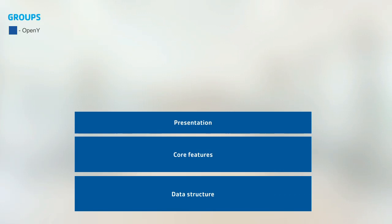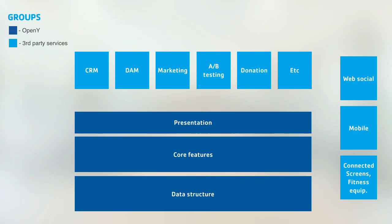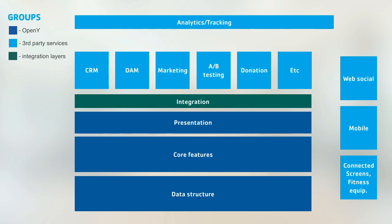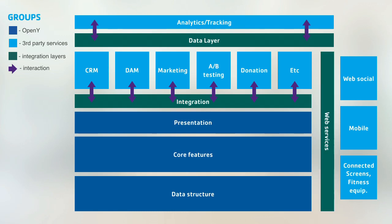From a business perspective, the OpenY architecture has two base layers: data structure and core features, plus a presentation layer visible to customers. We also have many third-party services requiring integration — web applications, social applications, mobile applications, and even equipment at branches. On top of this we have analytics and tracking. We created an integration layer using web services to interact with third-party APIs, fitness equipment, and mobile applications.